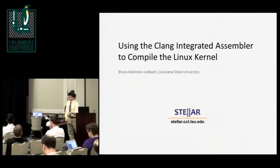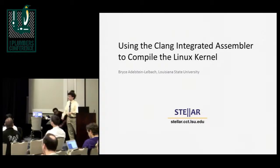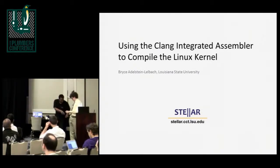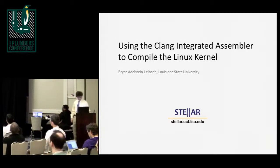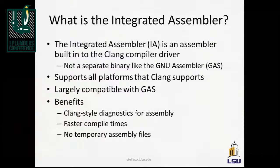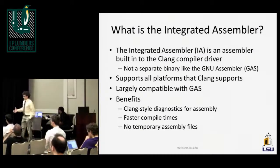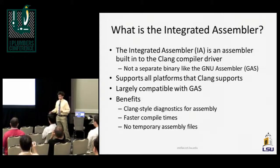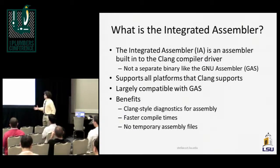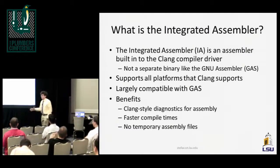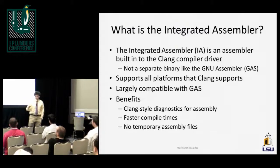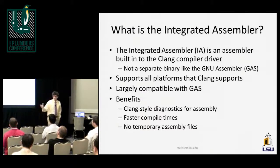I'm Bryce. So first let's talk about what the integrated assembler is. The GNU assembler is its own separate project, separate from GCC — it's its own binary driver — whereas Clang's integrated assembler is something built into Clang. When you compile with Clang's integrated assembler, you're not generating an assembly file and then passing it to the GNU assembler. It's all being done within the Clang compiler.